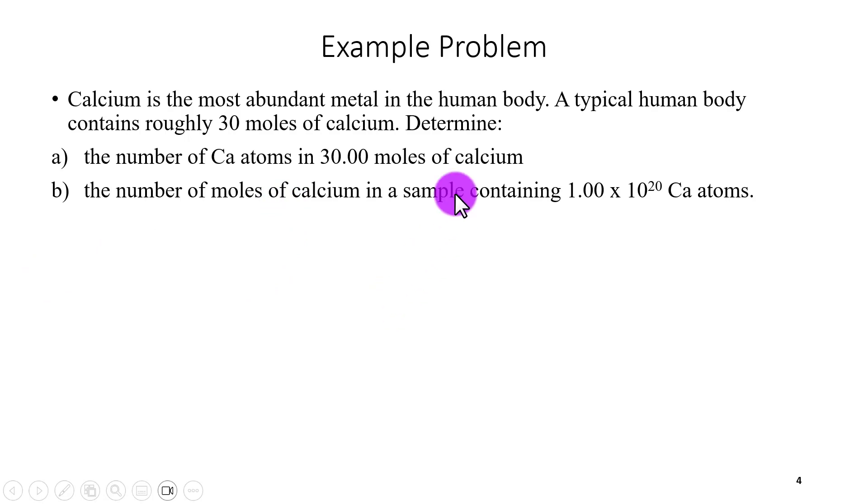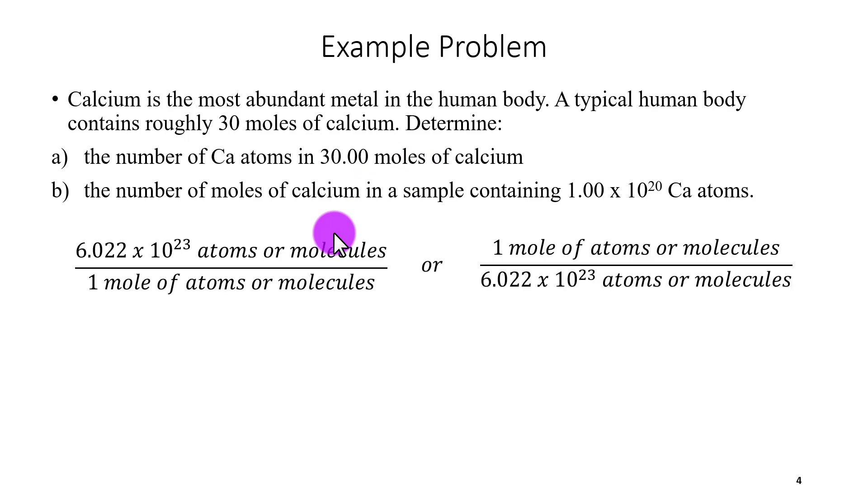Similar to the previous videos, we always start with the amount that we are given in the problem. So 30 moles of calcium. Now we have two different conversion factor forms, either this one or this one. The important part is to determine what am I starting with and what am I asked. I am starting with moles and I am asked to figure out calcium atoms. So I want moles to cancel because I am starting with moles and I want to end up with atoms.